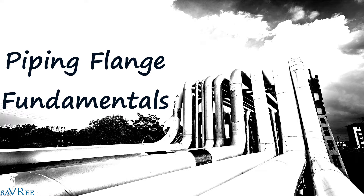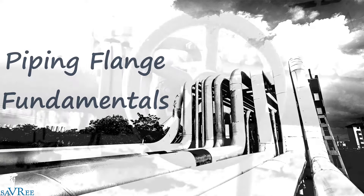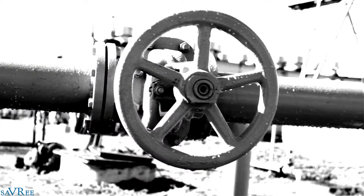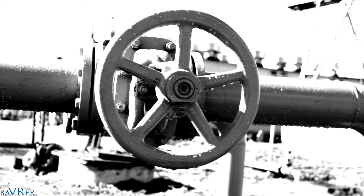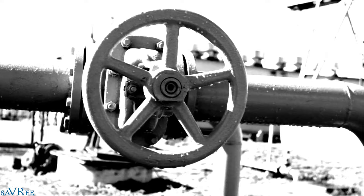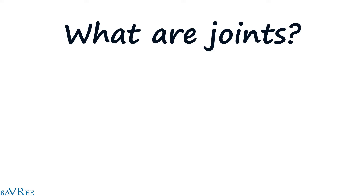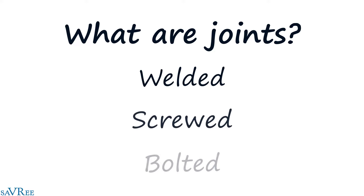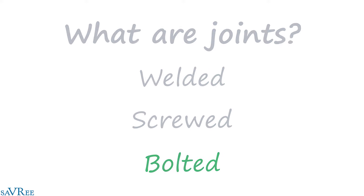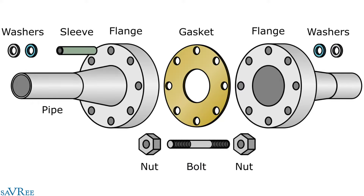In this course we're going to be talking about piping and flanges. Fluids must move within piping systems in a safe and efficient manner, and it's pipes, joints, fittings and valves that allow this to occur. A joint can be welded, screwed or bolted. This course covers the topic of bolted joints, specifically flanges, gaskets and fasteners, which are essential components of all bolted joints.